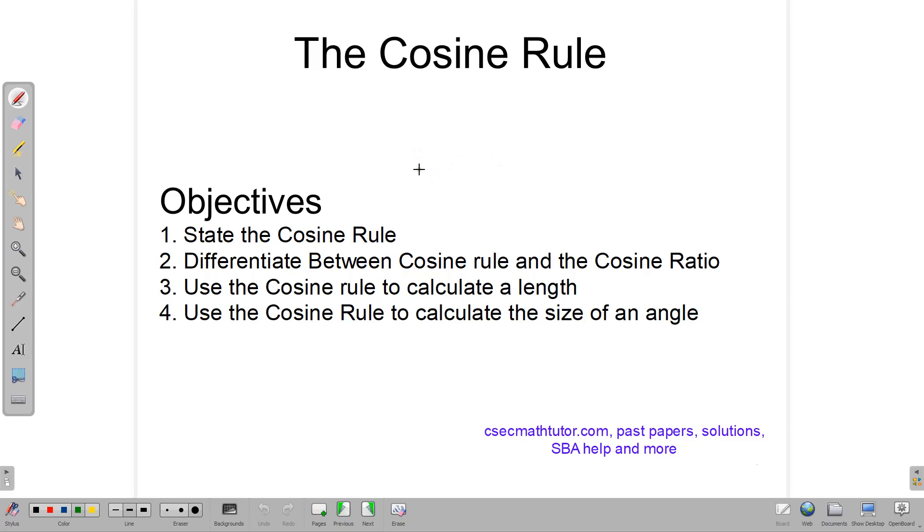Hello and welcome back everyone. In this lesson we are going to be looking at the cosine rule. We have four objectives: to state the cosine rule, to differentiate between the cosine rule and the cosine ratio, to use the cosine rule to calculate a length, and to use it to calculate the size of an angle.